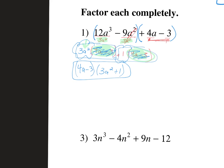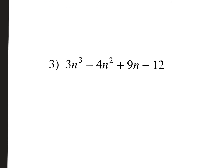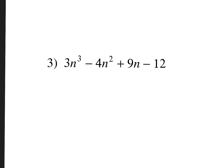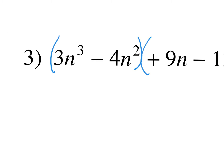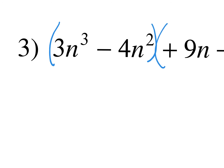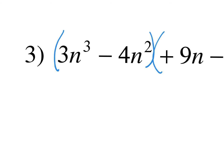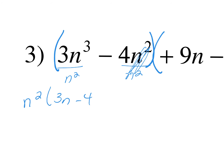Let's do another one. Look at number three — first question: is there a GCF? Is there a letter and/or number I can take out of all four terms? No. Since there are four terms, we're going to group the first two and the second two. Looking at the first parentheses: what can I take out of 3n cubed and negative 4n squared? n squared.